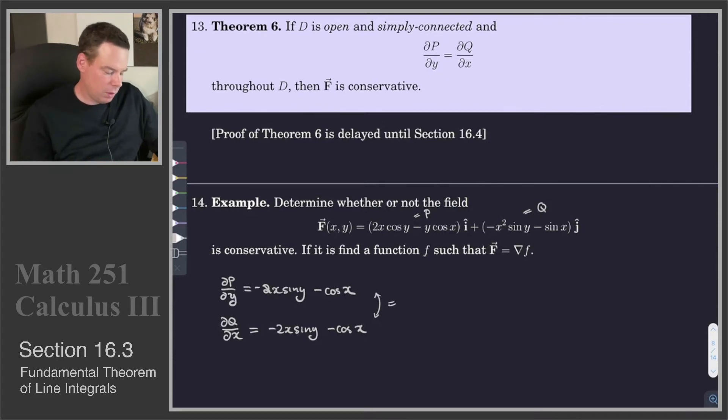Theorem 6 says, we also have to be on an open and simply connected domain. Our domain in this case is not specified, so we take it to be as big as possible. So it's all of R2. There's no problem with evaluating the vector field at any point in R2. And that is open and simply connected. And so that means that, by Theorem 6, we have that our vector field is conservative.